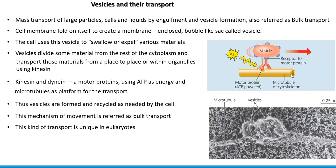There are two types of motor proteins involved: kinesin and dynein. They use ATP as energy and use microtubules as a platform. Microtubules, a component of the cytoskeleton, serve as a platform upon which vesicles are carried to another location by the motor protein kinesin. This transport is powered by ATP. Vesicles are formed and recycled as needed. This mechanism of moving large particles, cells, and liquids is called bulk transport — an energy-dependent process unique to eukaryotic systems, not found in prokaryotes.